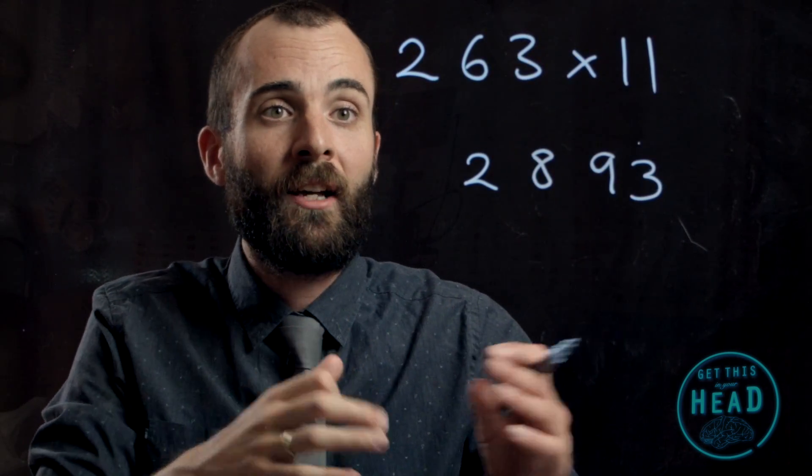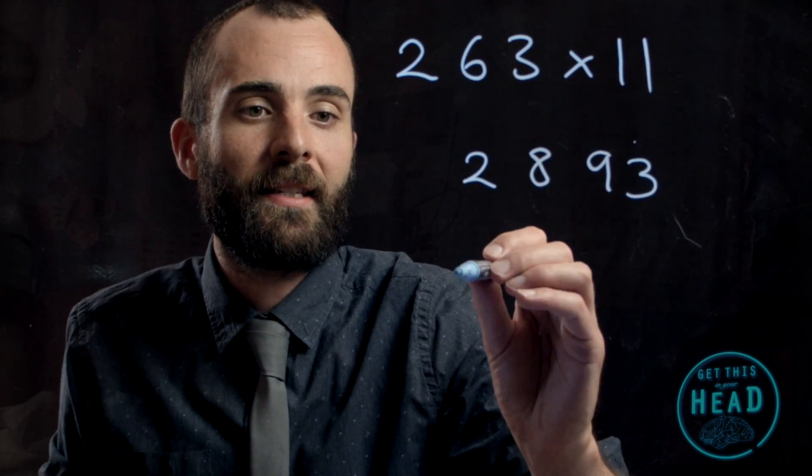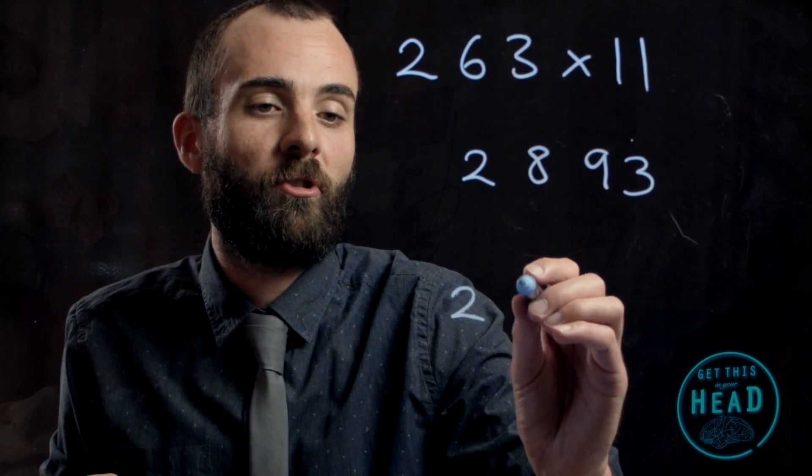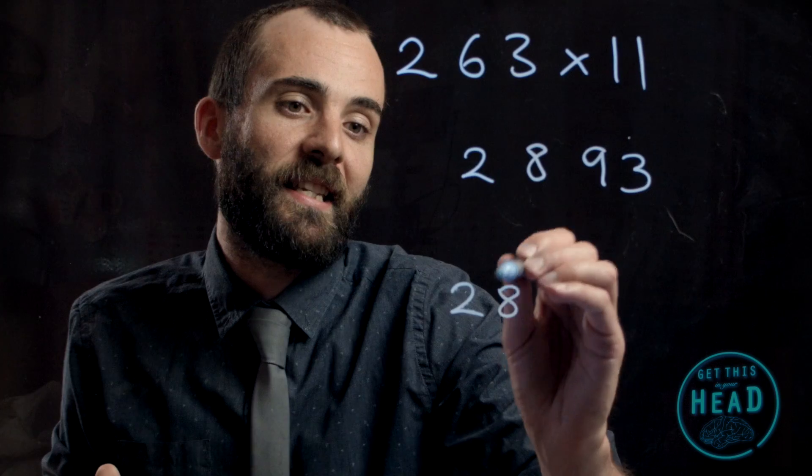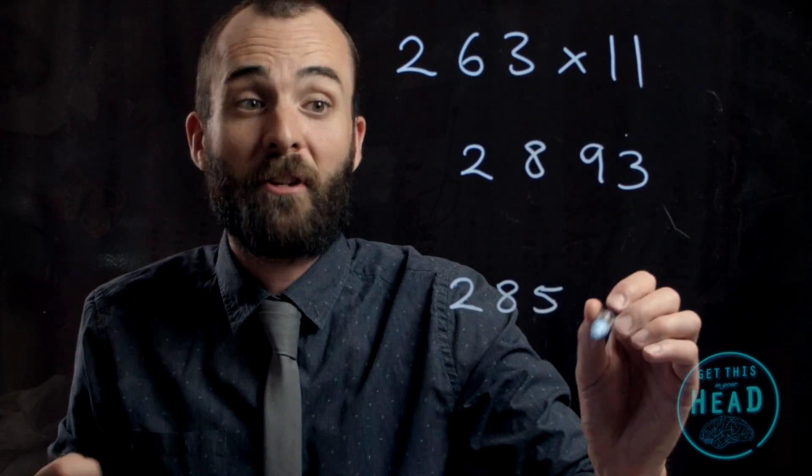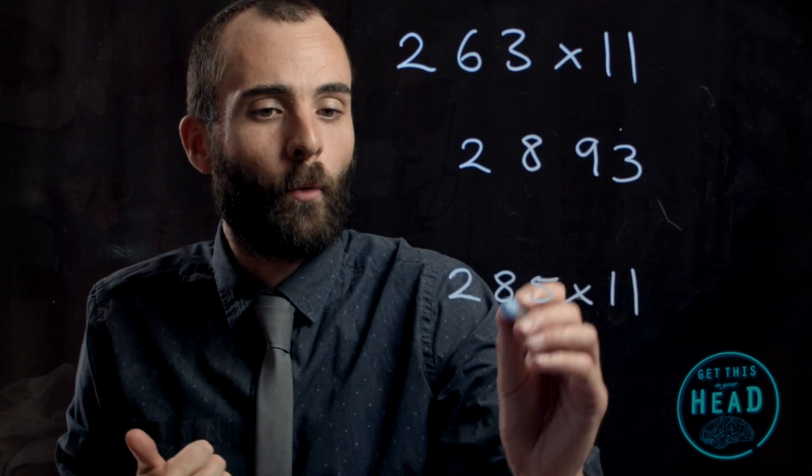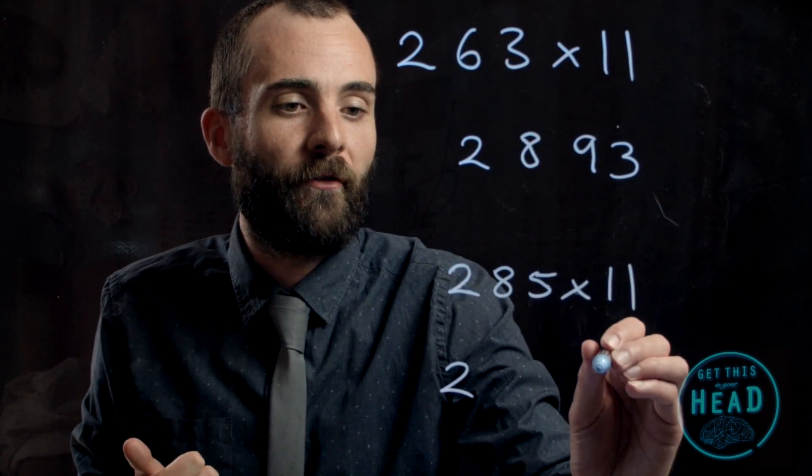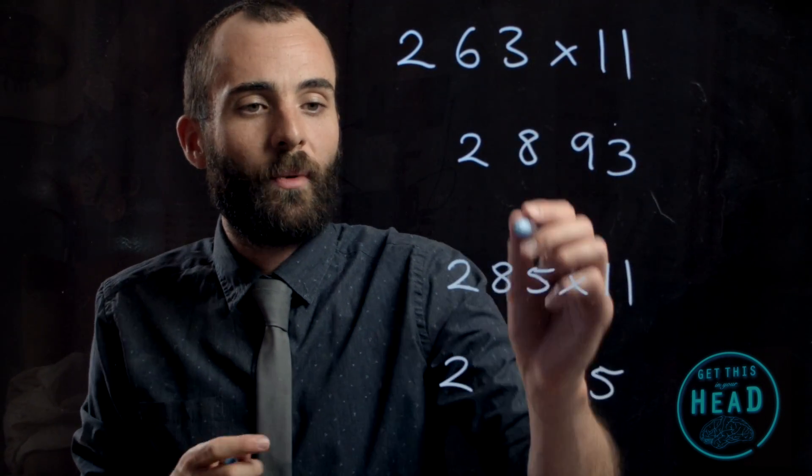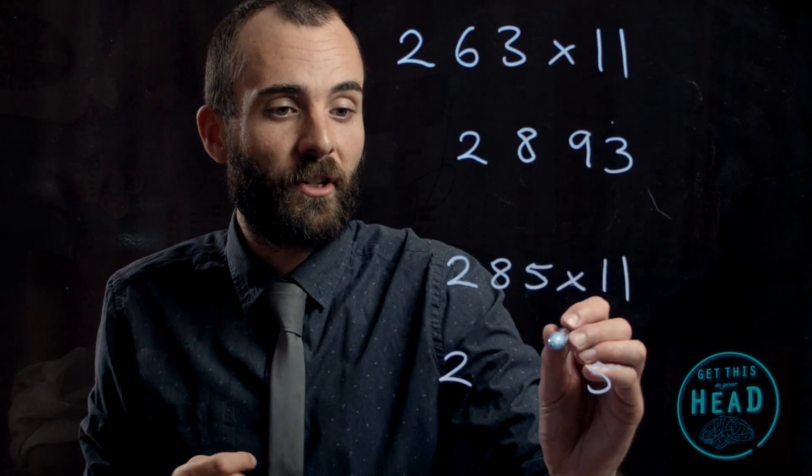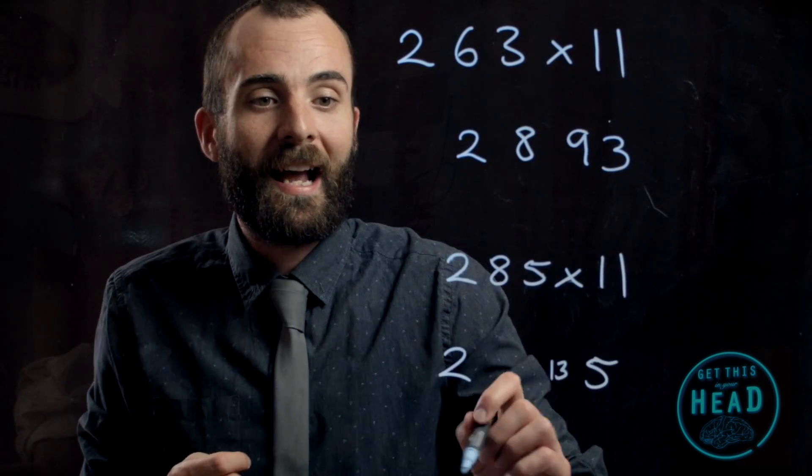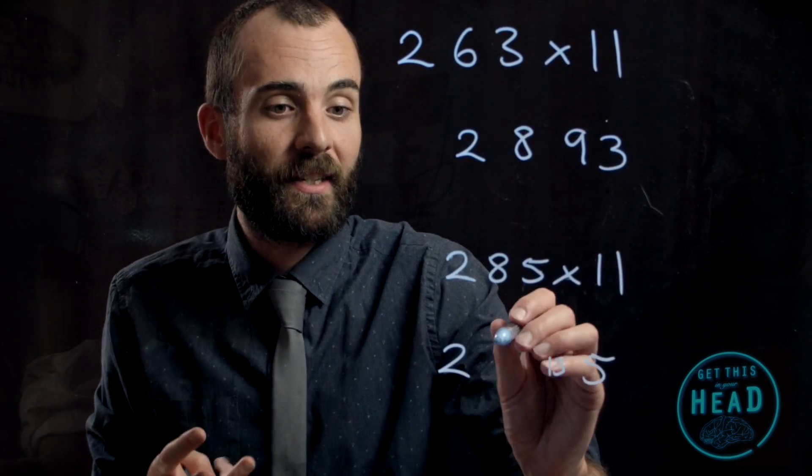If we had numbers that gave an answer greater than 10, for example, let's say we had 285 multiplied by 11. In exactly the same way, we'll put the 2 at the beginning, 5 at the end. Now we're doing 8 add 5, that gives us 13, and 2 add 8, that gives us 10.